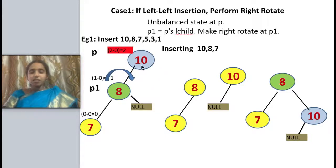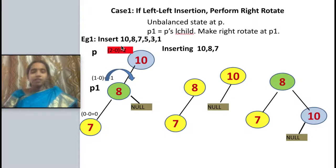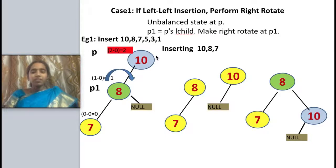Now I am inserting 7. At this time the balance factor is 0 for node 7, 1 minus 0 which is plus 1 for node 8, and 2 minus 0 which is plus 2 for node 10. I am getting an imbalanced condition here, so I have to perform a right rotation.